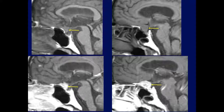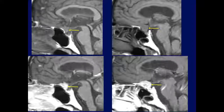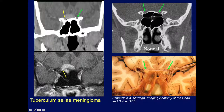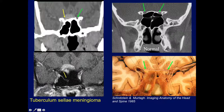Here's another tuberculum sellae meningioma with enhancement. On CT you can see what's happening — here's the tumor, this is the normal left optic canal, but the tumor has extended into the right optic canal. Even though this is a very small meningioma involving the region of the tuberculum sellae, the extension of the tumor into the right optic canal — seen on both CT and MRI — is the critical finding.